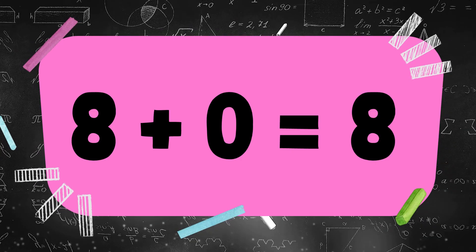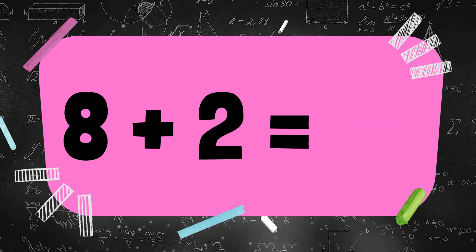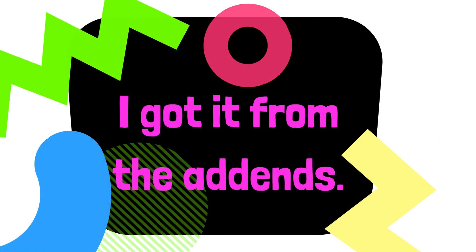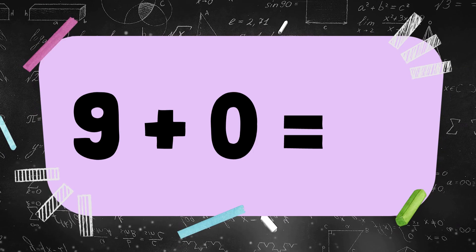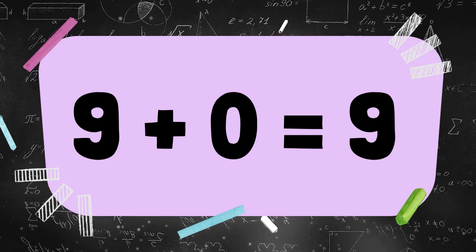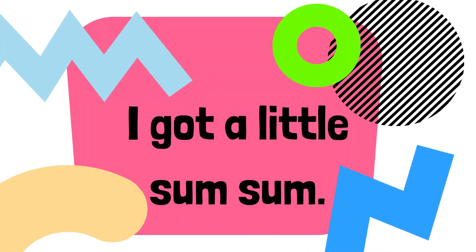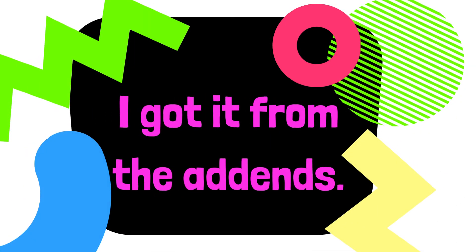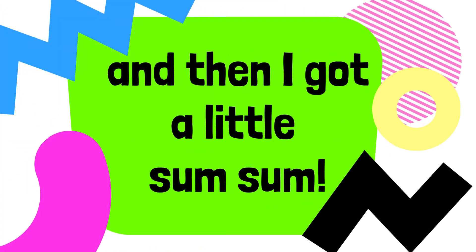8 plus 0 is 8, 8 plus 1 is 9, 8 plus 2 is 10. 9 plus 1 is 10. I got a little sum sum, I got it from the add-in, I added them up, and then I got a little lump sum.